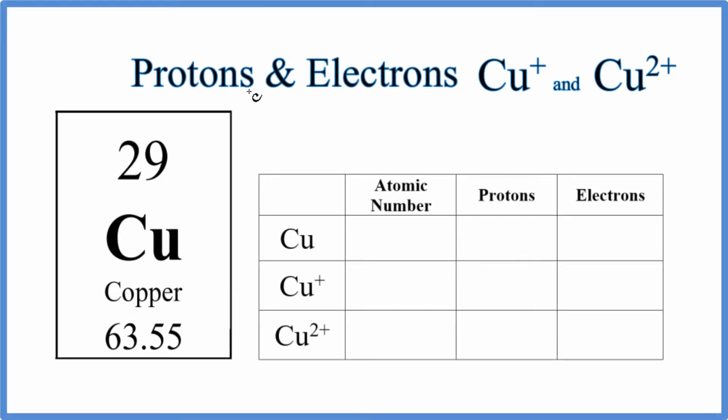In this video, we'll find the number of protons and electrons for Cu plus and Cu 2 plus. This is the copper one ion, and this is the copper two ion. So when we look at this, it's probably best to figure out the protons and electrons for neutral copper.